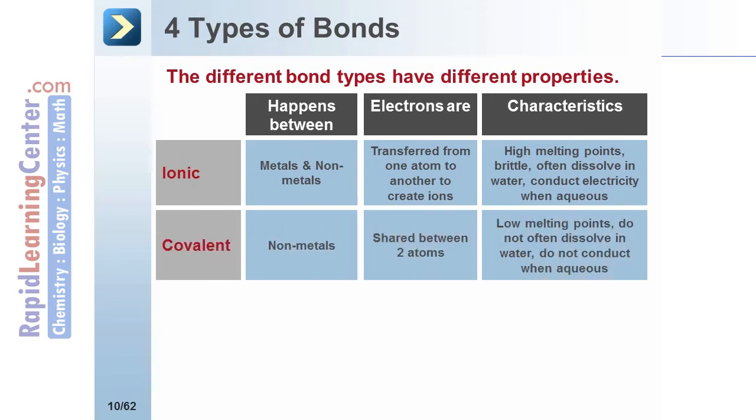Covalent compounds are formed when two non-metals share electrons evenly. They have low melting points, they do not often dissolve in water, and if they do dissolve in water, they do not conduct electricity.